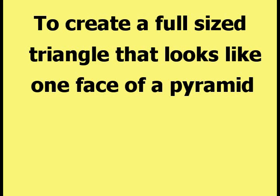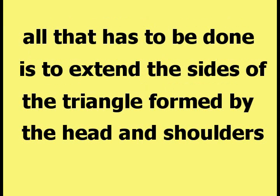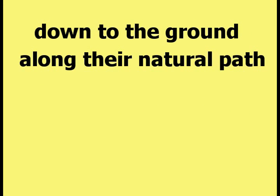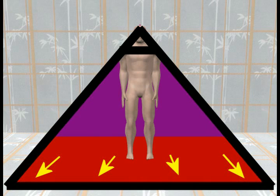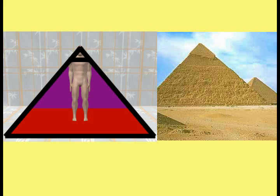To create a full-sized triangle that looks like one face of a pyramid, all that has to be done is to extend the sides of the triangle formed by the head and shoulders down to the ground along their natural path, as shown in this picture. A line connecting the bottom of the two extended triangle sides was added to the bottom of the picture to complete the triangle. Here is a picture comparing an Egyptian pyramid to the model of the human being with the natural triangle formed by the head and shoulders drawn on it.